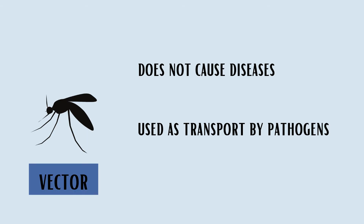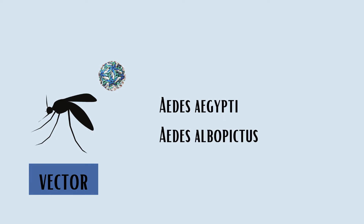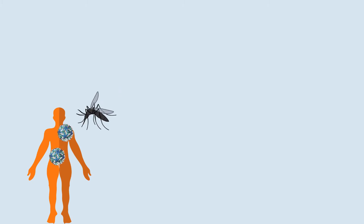Mosquitoes are vectors for Dengue virus — specifically the mosquito species Aedes aegypti, and more rarely, Aedes albopictus. When a mosquito bites a person infected with Dengue virus, the mosquito becomes infected too, which lasts for its lifetime of about 3–4 weeks.